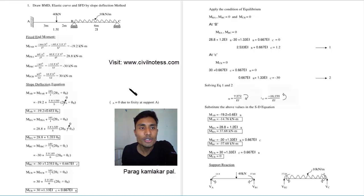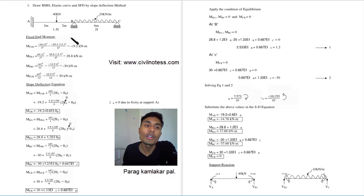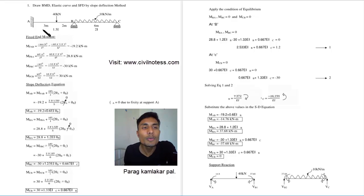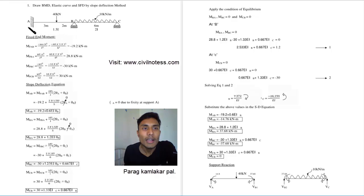First we calculate the fixed end moment using the standard formula. For span AB, W equals 40 kilonewton, a equals 3 meters and b equals 2 meters. The formula for fixed end moment of AB is W·a·b² divided by L², and the formula for fixed end moment of BA is W·a²·b divided by L².